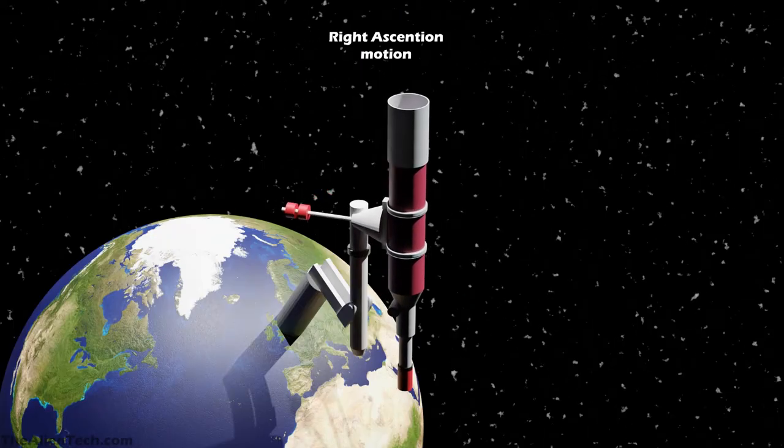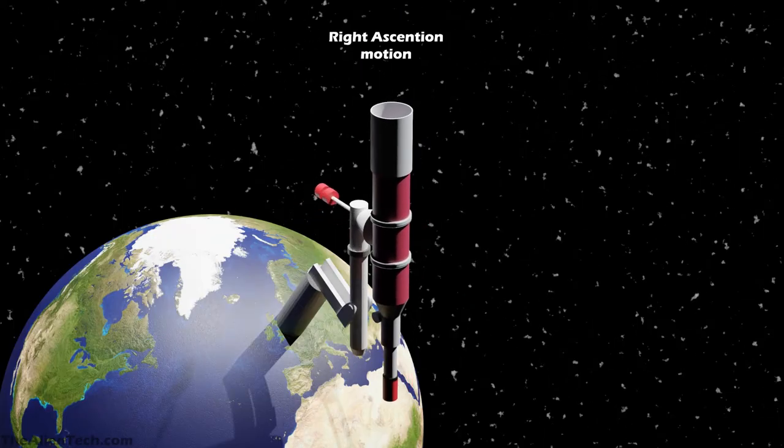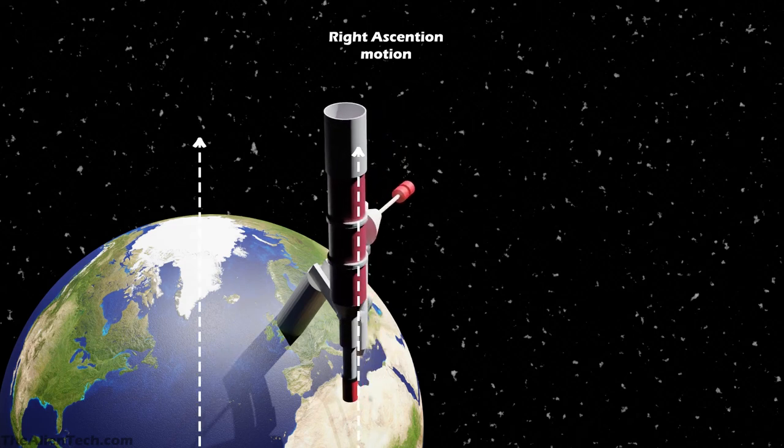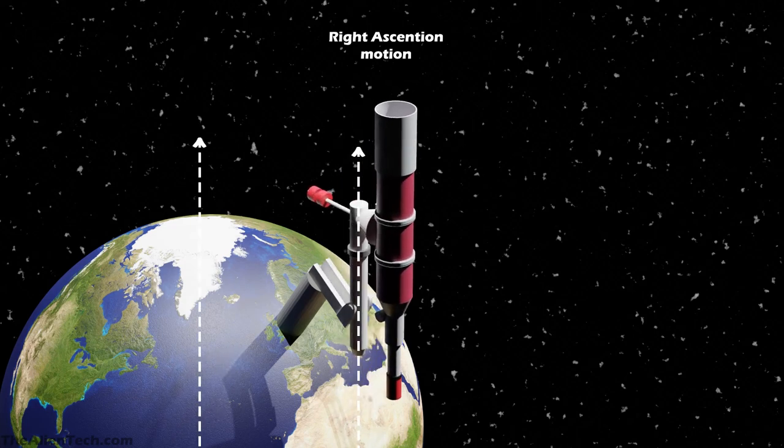Now let's see that with an example. As you can see, the polar axis is parallel to the earth's axis.